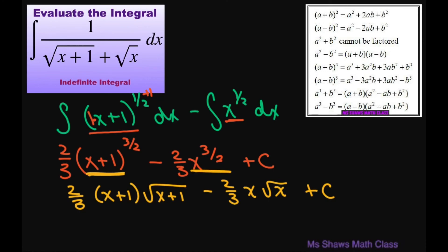Also, if you wanted to, you could also factor out the 2 thirds, you don't have to, but if you did, you would get x plus 1 times the square root of x plus 1 minus x square root of x, like that, and then put plus c. But this one's fine this way.